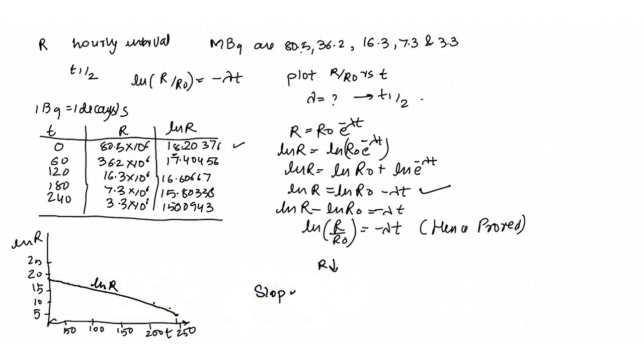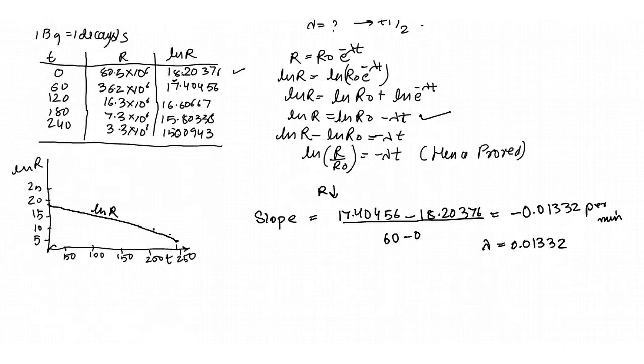The slope of this straight line is equal to 17.40456 minus 18.20376 divided by 60 minus 0, then this will be equal to minus 0.01332 per minute. This can also be written as 0.01332 per minute. Now, the half-life calculated using lambda t half is equal to ln 2 by lambda, then ln 2 by 0.01332, and this will be equal to 52.038 minutes.